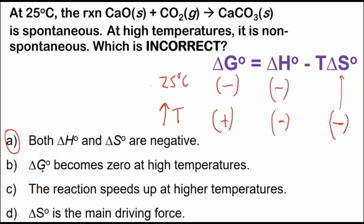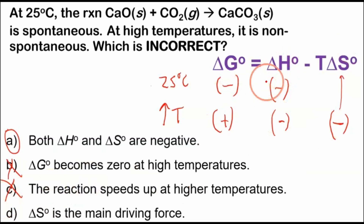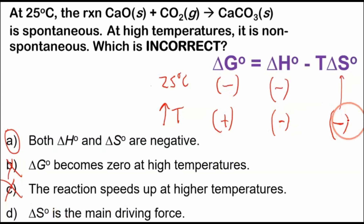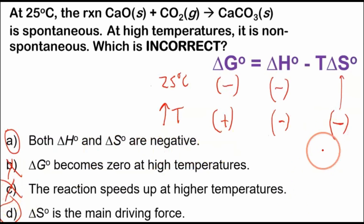Reading the answer choices: the change in Gibbs energy becomes zero at high temperature — definitely not, because it becomes positive. The reaction speeds up — definitely not; the Gibbs energy equation deals with thermodynamics, not kinetics. The entropy change is the main driving force — actually, the entropy is going down in this reaction, creating a more orderly system with fewer possible arrangements. Since the entropy of the universe must increase for any spontaneous process, entropy is not the driving force. This is an exothermic reaction, so energy released as heat is the driving force despite the reduction in entropy.